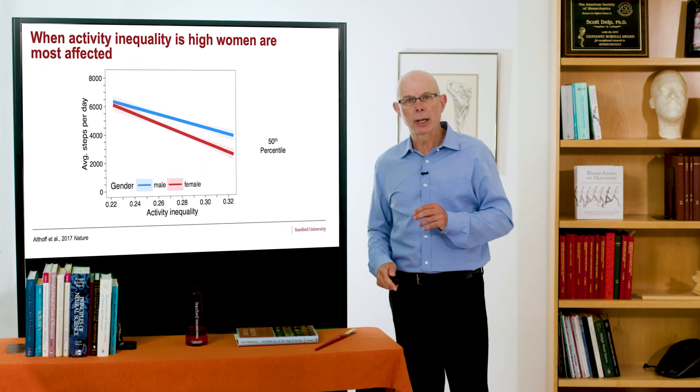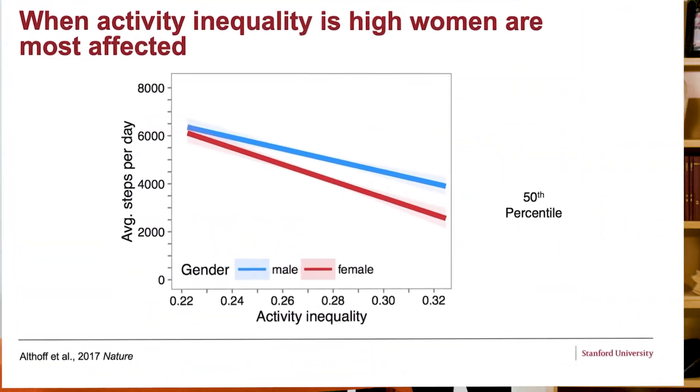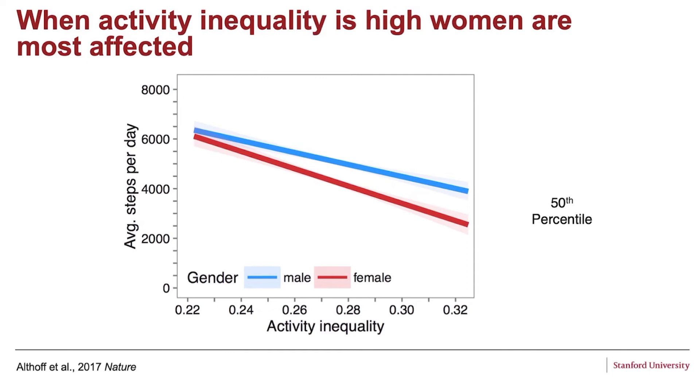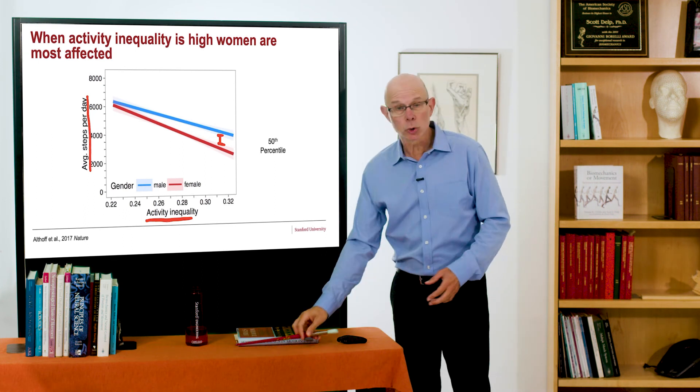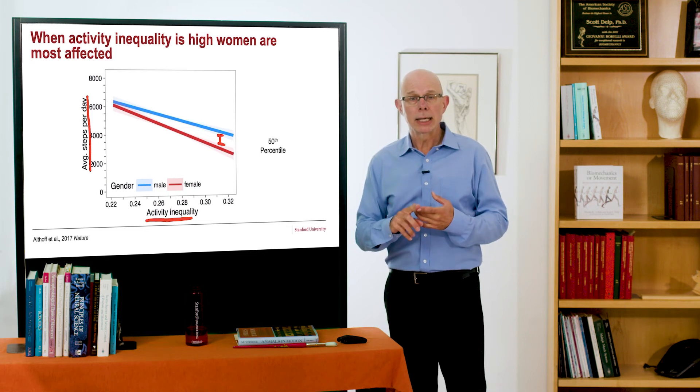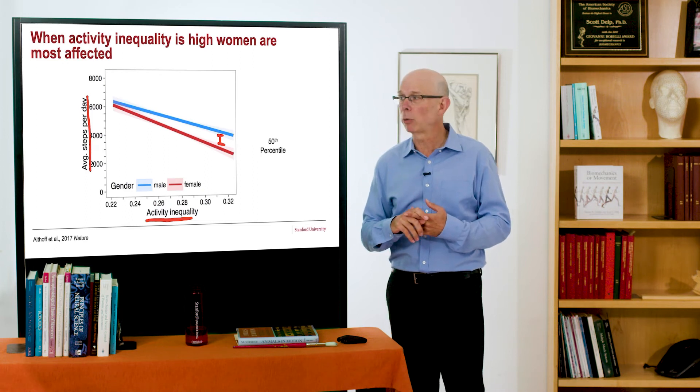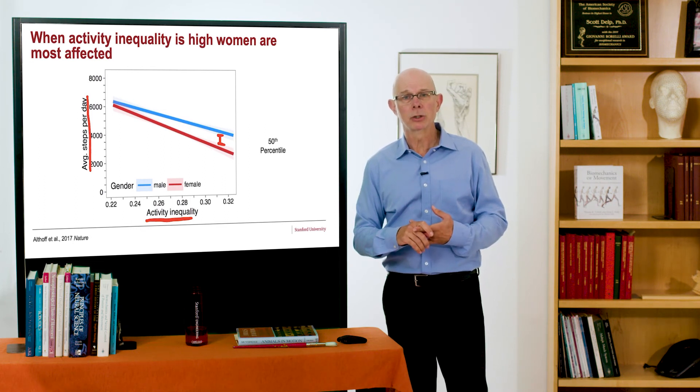Another question we wanted to ask is, when activity inequality is high, is there a difference between genders? The answer is yes. What you see here is average steps per day versus activity inequality. As activity inequality goes up, it differentially disadvantages women. The slope of the red line is less than the blue line. What we found was that this was true not just in the US, but in many countries where activity inequality was high. It differentially disadvantages health outcomes for women, and we saw this consequence in terms of reduced life years for women in those countries.